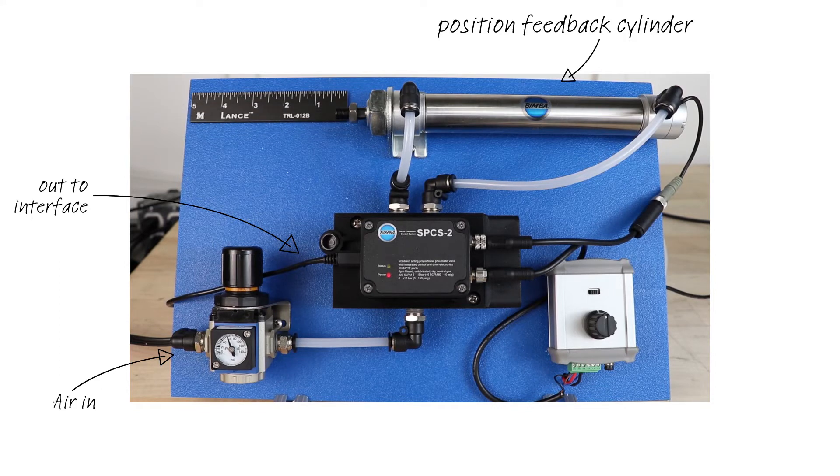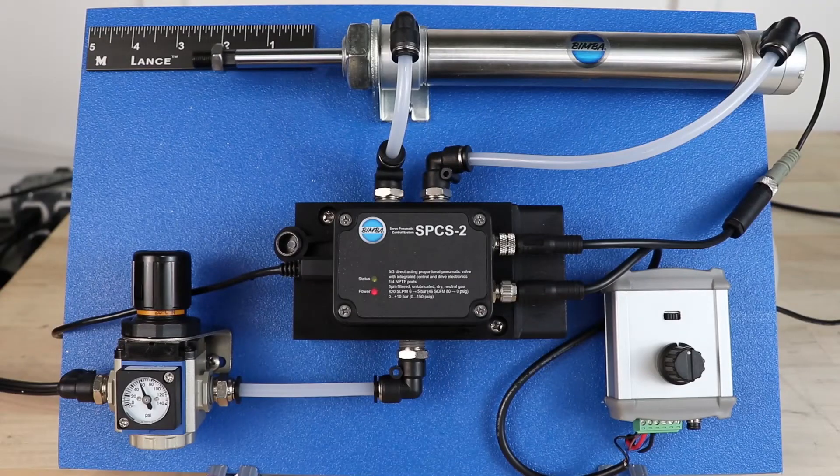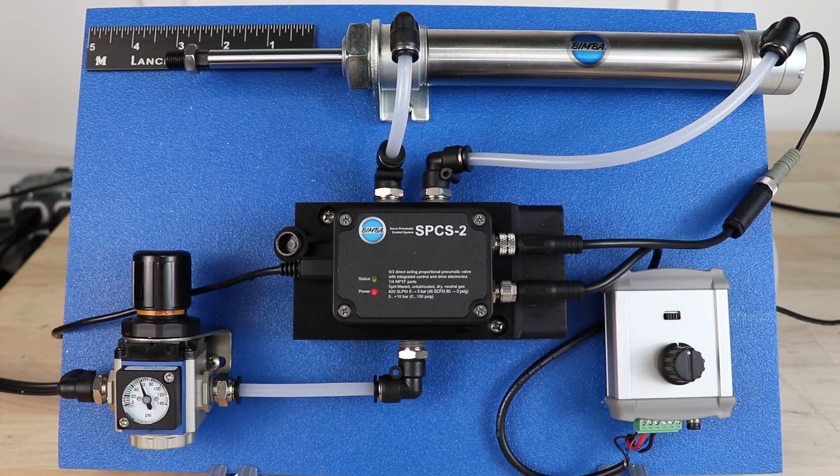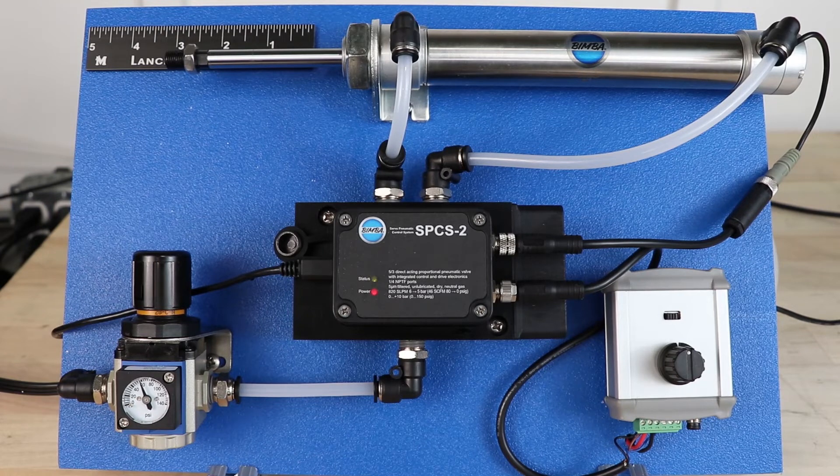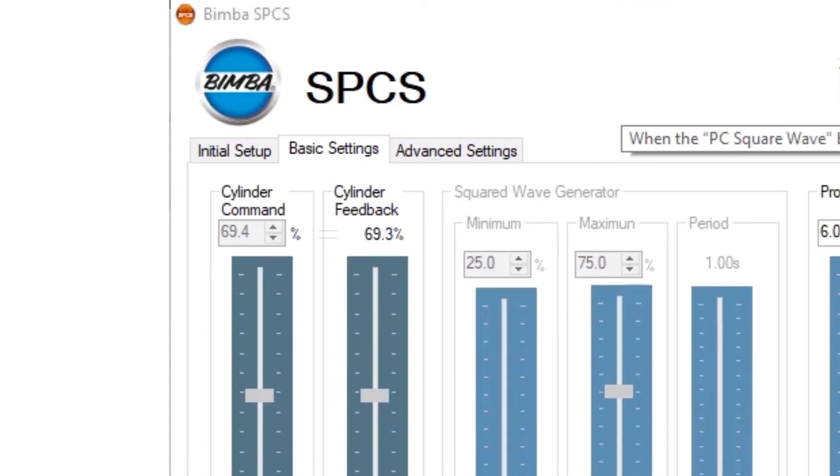On a technical level, when in operation the SPCS2 valve receives a command signal and supplies enough air to extend the rod. The actuator sensor then sends feedback on the rod positioning, causing the valve to generate additional power until the feedback voltage equals the command voltage.